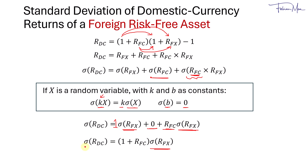So the standard deviation of domestic currency returns of a foreign risk-free asset is 1 plus the return of the foreign risk-free asset in its own local currency terms, multiplied by the currency risk.